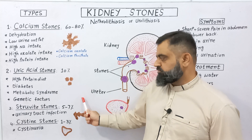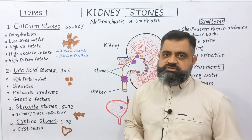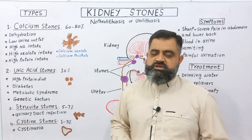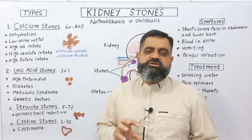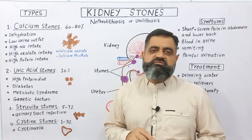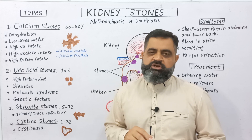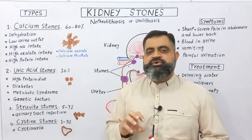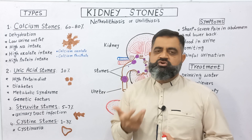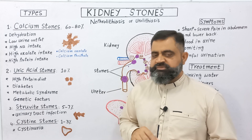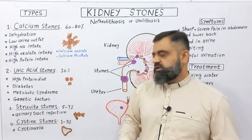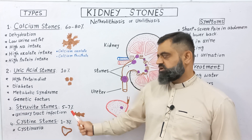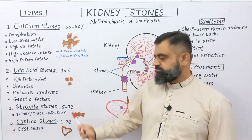The third type of stones are struvite stones. Struvite stones are 5 to 7 percent of all kidney stones. These stones are mostly found in females due to infection of the urinary tract (UTI), which is caused by certain bacteria. These bacteria can lead to the formation of struvite stones.